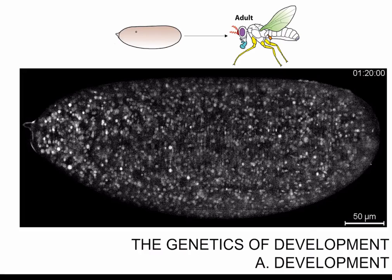Development is the process by which a single cell zygote develops into a fully patterned adult individual. For example, the fruit fly Drosophila melanogaster lays an egg that is quite featureless and contains only one cell, and over a period of 24 hours this egg develops into a larva, and over the next few days the larva develops into an adult that has all the necessary organs in all the right places.